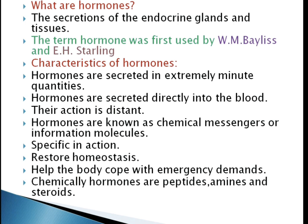Let's discuss the characteristics of hormones. Hormones are secreted in extremely minute quantities. The amount of hormone released is determined by the body's needs. They are secreted directly into the bloodstream and are carried by blood circulation. Their action is distant — a hormone secreted in one part of the body produces an effect in another part of the body; that is, they act on target cells or organs away from their source.